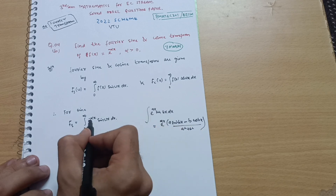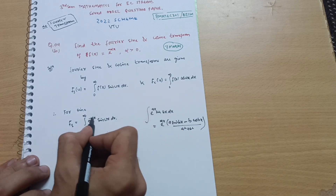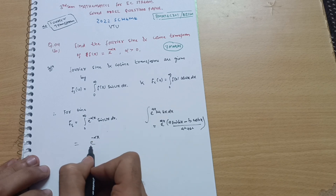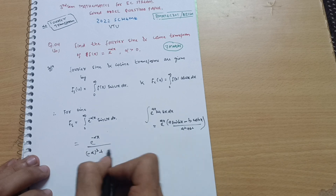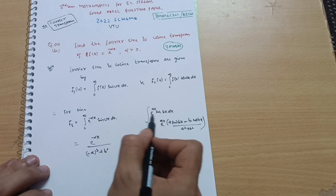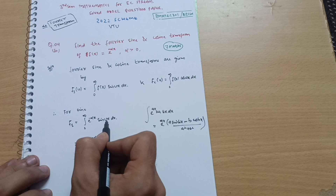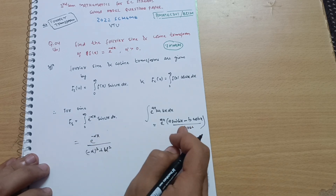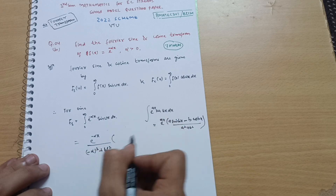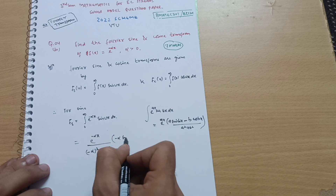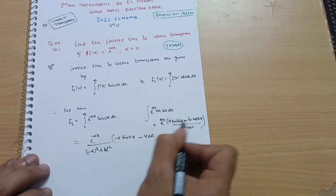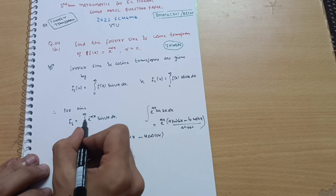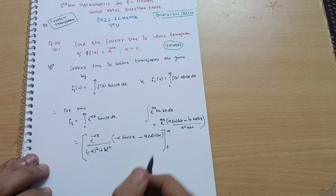Now compare the two expressions. Here, a = −α and b = u. So substituting, we get e^(−αx) divided by (−α)² + u², multiplied by [−α·sin(ux) − u·cos(ux)]. This is the integrated form of the term, and the limits will run from zero to infinity.